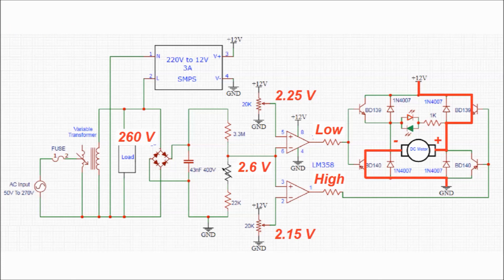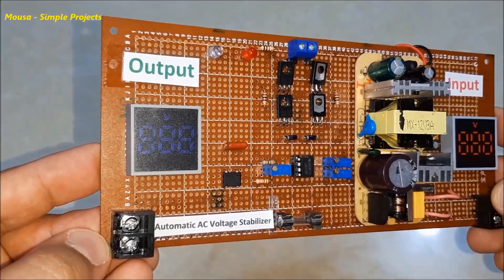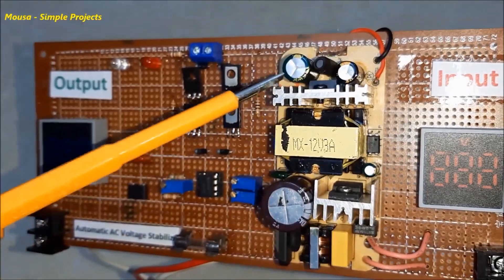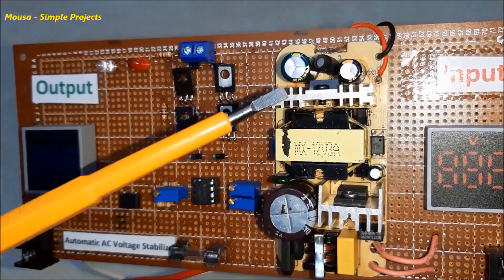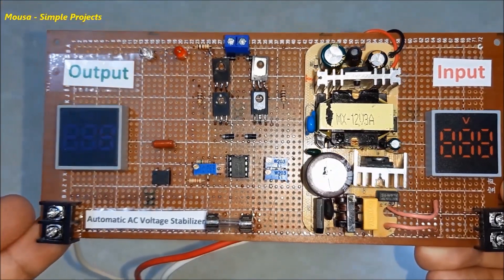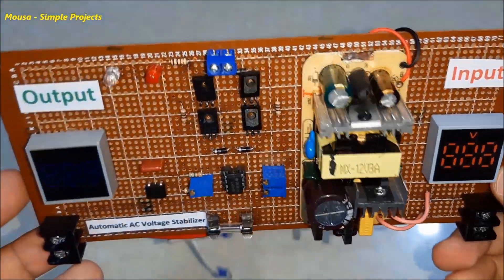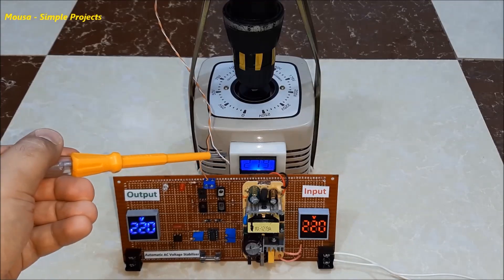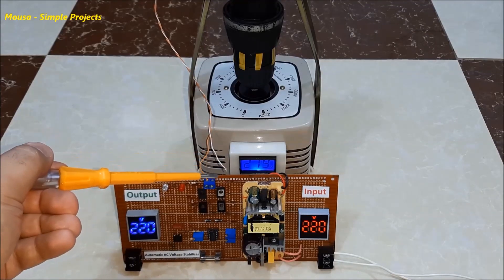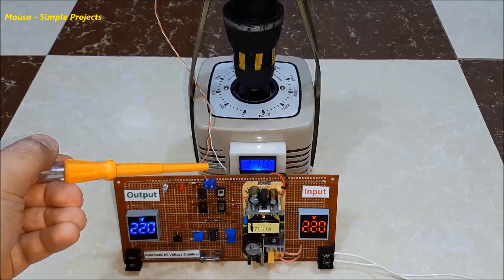To correct the voltage, I soldered the components on the prototype board. This is the 12 volt power supply for running the circuit and the motor. I used two voltmeters to read the voltage at the input and the output. At the beginning, I just ran the circuit without connecting the motor because I wanted to preset the potentiometers.